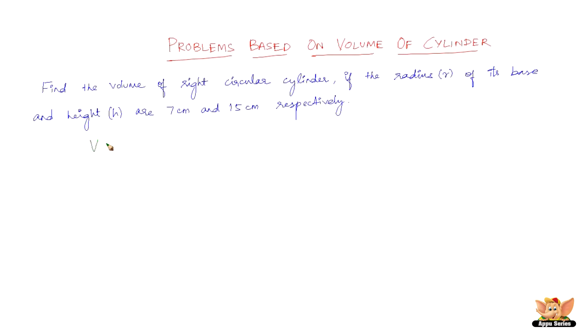Now we know that the volume of the cylinder is given by πr²h. So all we have to do is substitute the values of r and h and there we have the volume.